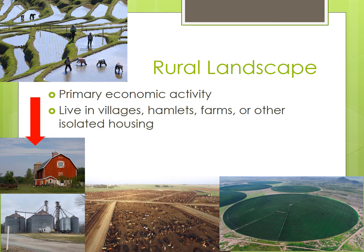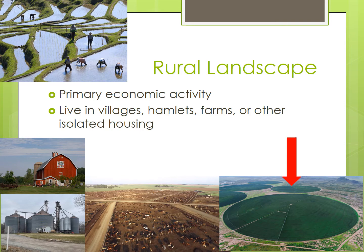Rice paddies, barns, grain elevators — which are used for storing surplus grain — and feedlots are all features found in rural areas. And the green circles associated with center pivot irrigation are another very recognizable feature of the agricultural landscape. Property and field borders are often marked by fences or hedges, heightening the visibility of these lines in the agricultural landscape.